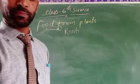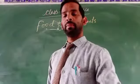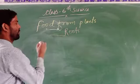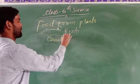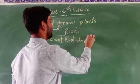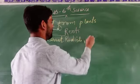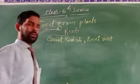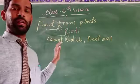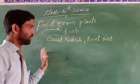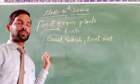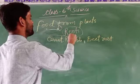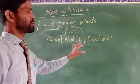You know that carrot, radish, and turnip are different forms of root we can eat. Carrot, radish, and beetroot are common in our daily life. These are the different forms of food material from plants in our root system — carrot, radish, beetroot.